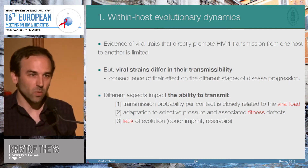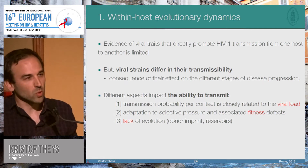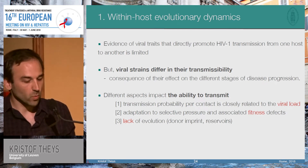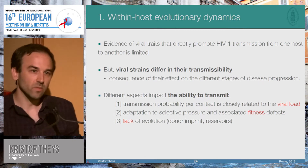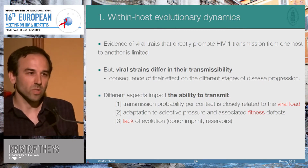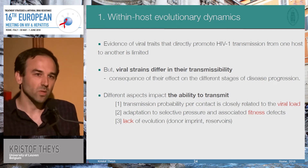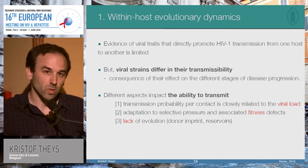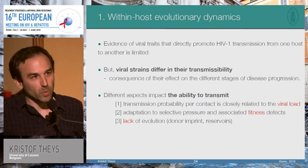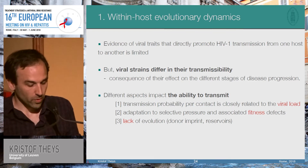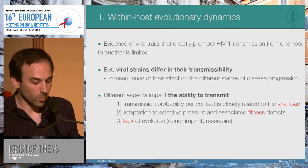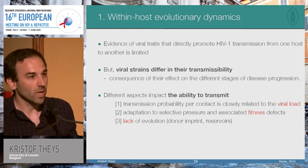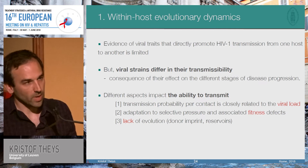HIV is evolving rapidly within a single host, but there is almost no direct evidence that a viral trait directly promotes transmission from one host to another. Different HIV strains do differ in their ability to transmit, but this is mostly an indirect consequence of disease progression. There are three aspects: viral load, adaptation — either to treatment or immune pressure — which affects what is transmitted, and thirdly, evolutionary imprints.